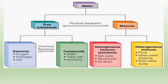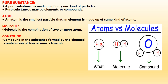The flow chart shows you the difference between pure substance and mixture. Pure substance includes elements and compounds. A pure substance is made up of only one kind of particle and may be an element or a compound. An element is made up of the same kind of atoms, and an atom is the smallest particle of an element. A molecule is a combination of two or more atoms. A compound is a substance formed by the chemical combination of two or more elements.